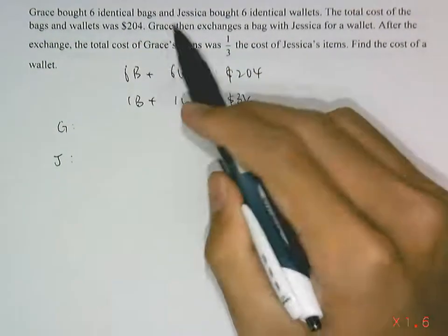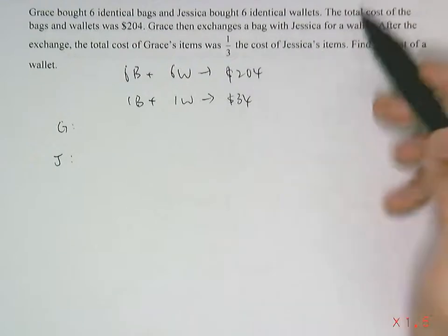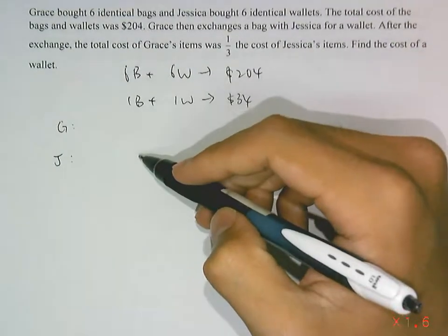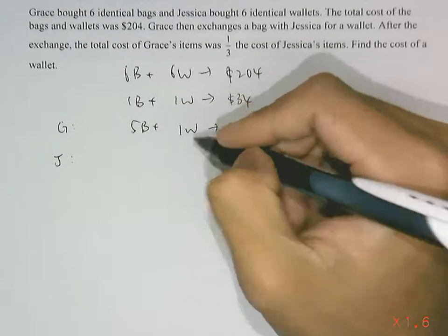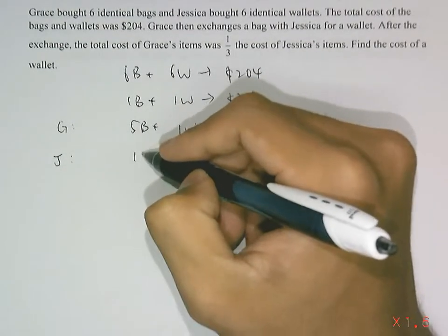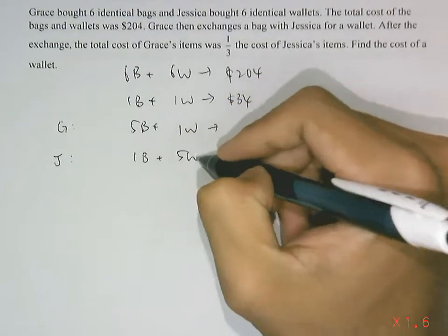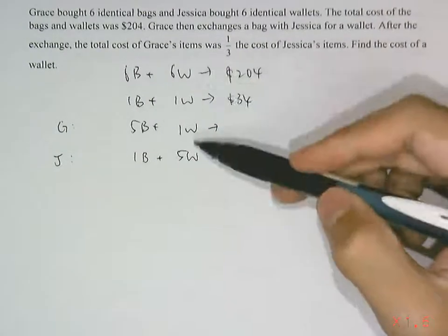If we want to know what Grace and Jessica had in the end: Grace exchanged a bag for a wallet, so Grace would then have 5 bags left and 1 wallet, whereas Jessica would have 1 bag and 5 wallets left.